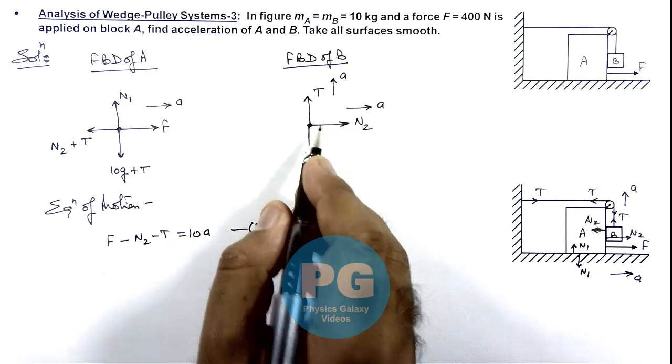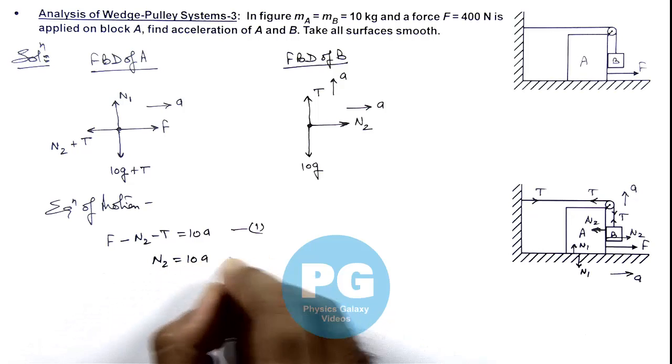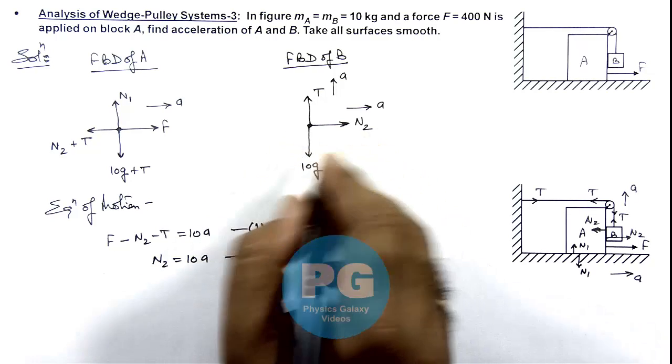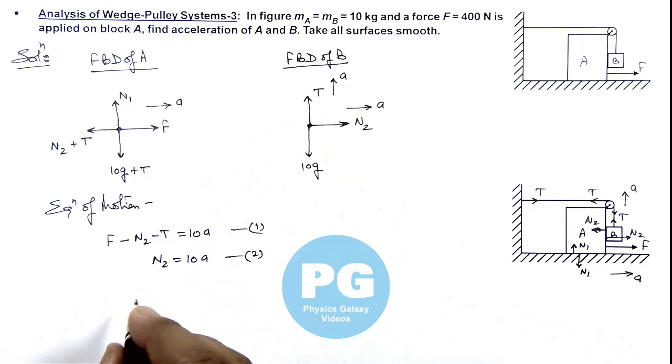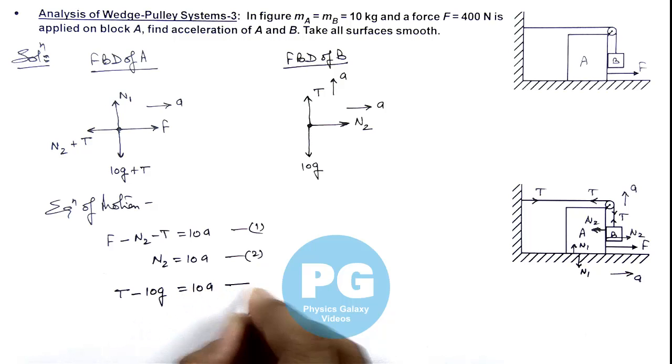For second block here we can write, N2 is equal to 10a, which is second equation for its motion toward right. And in upward direction for its acceleration we can write, T minus 10g is equal to 10a that is our equation 3.